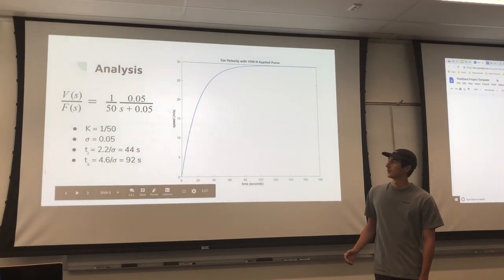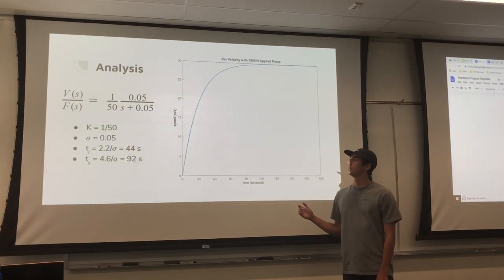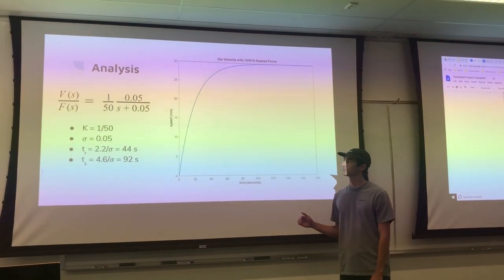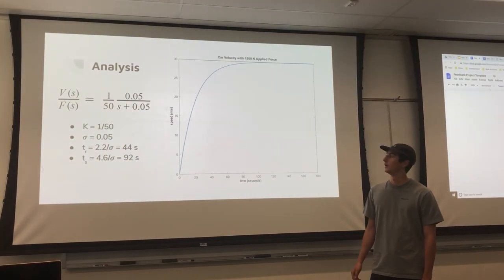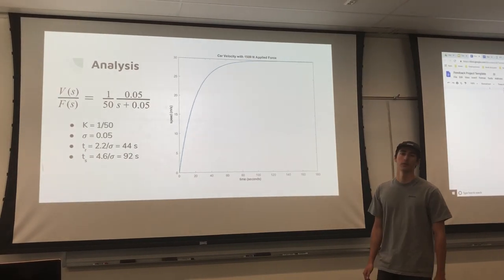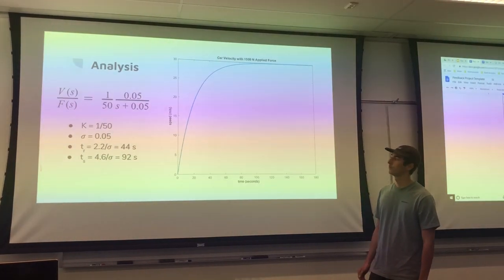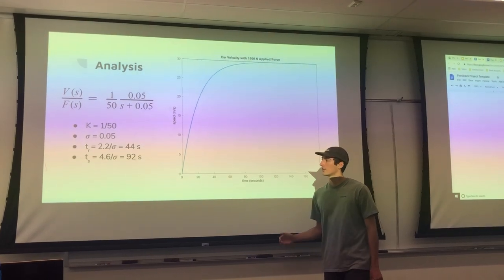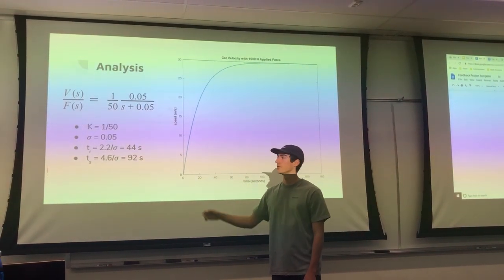We have a gain value k of 1 over 50 and a sigma value of 0.05. From that, we can find rise time and settling time. For rise time, we use the equation 2.2 over sigma. We get a rise time of 44 seconds, which is very high for a car.